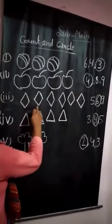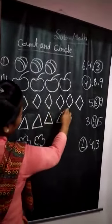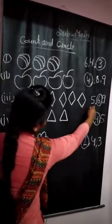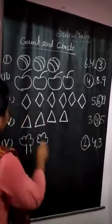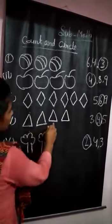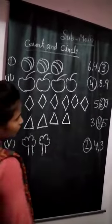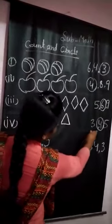Diamond. One, two, three, four, five, six. Six diamonds. Six number circle. One, two, three, four. How many triangles are? Four triangles. Four triangles circle.